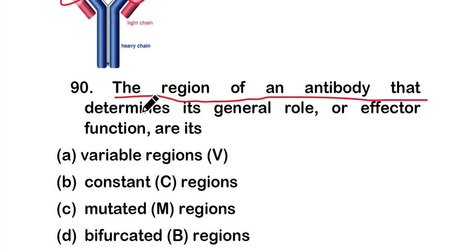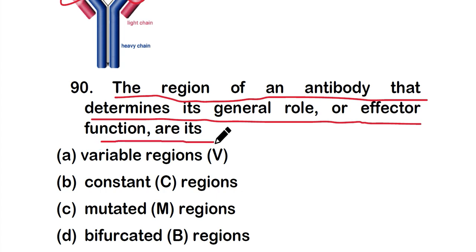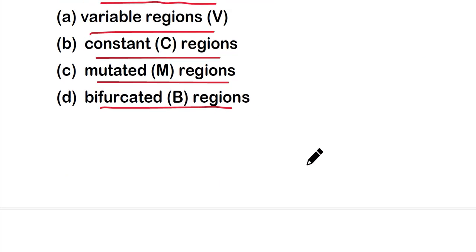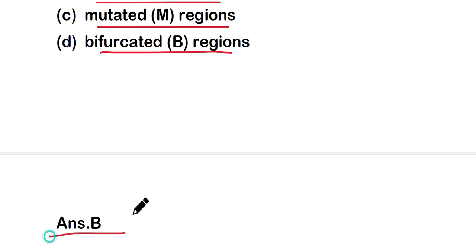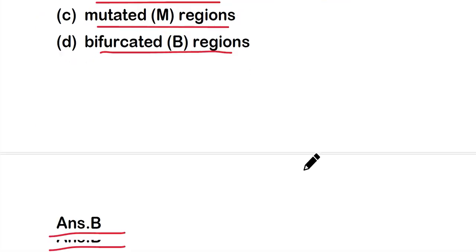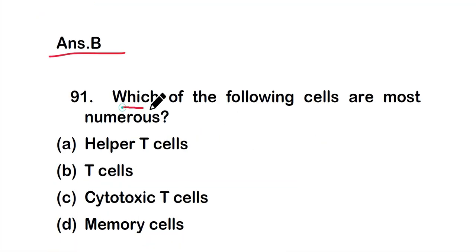Question number 90: The region of an antibody that determines its general role or effector function is its — option A: variable region, option B: constant region, option C: mutated region, or option D: bifurcated region. The right answer is option B — the constant region determines the antibody's general role or effector function.